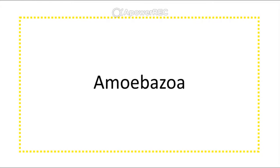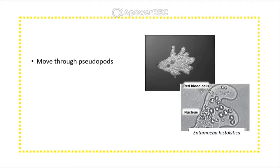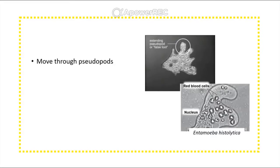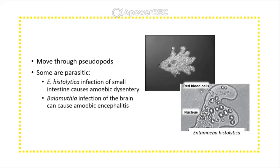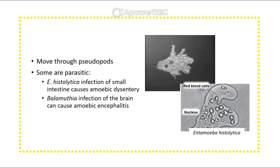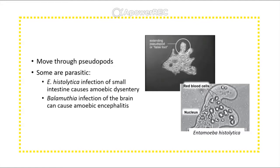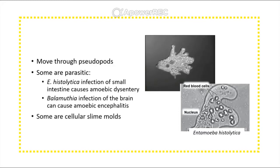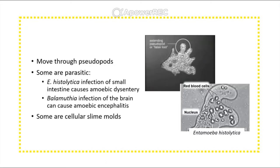Amoebozoa are eukaryotic organisms that move through pseudopods, or false feet. Some are parasitic, like Entamoeba histolytica, which can infect the small intestine and cause amoebic dysentery, and Balamuthia, which can infect the brain and cause amoebic encephalitis. Some are called cellular slime molds, although they are not molds at all — they are amoebas.